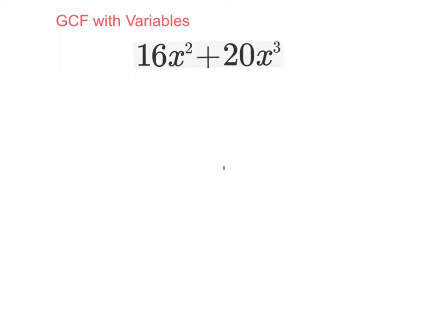I see how to find the GCF if it is just numbers, but as soon as you throw variables into it, my brain explodes! Can you give me an example?